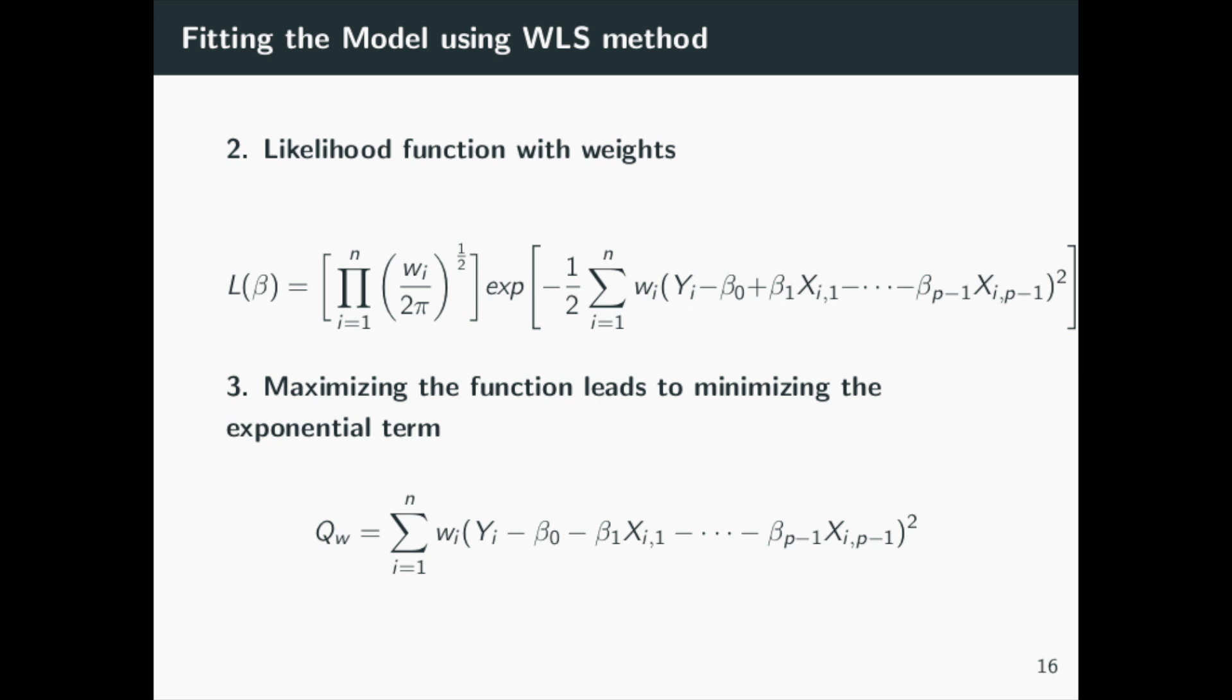This is the same method used for the generalized model, except we substitute the variances with the appropriate weights. It should be noted that there is now a summation in the exponential, so don't just rewrite the likelihood function.